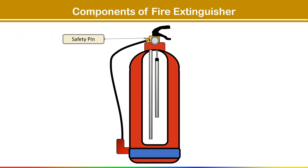Here you can see the safety pin. The safety pin, also called the temper seal, is used to prevent accidental discharge of the extinguishing agent. It needs to be removed before operating the extinguisher. Next, the hose connector is used to connect it with another hose, a tap, or a hose appliance. It is usually made of steel, brass, stainless steel, aluminum, or plastic material.